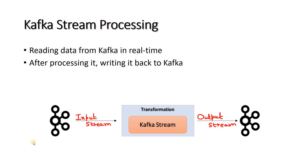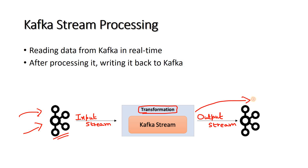Here we have our input stream, which comes from a topic — maybe from a producer or using Kafka Connect to ingest data. The input stream is a continuous flow of data. We apply a transformation logic — enriching, filtering, or performing certain activities. Unlike the Kafka sink connector which writes to an external database, the Kafka stream processing framework writes the output stream back to a Kafka topic.